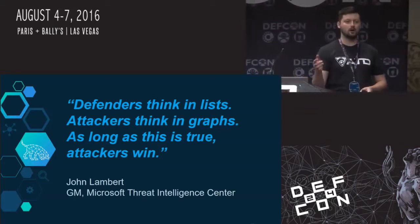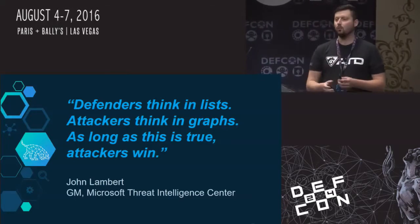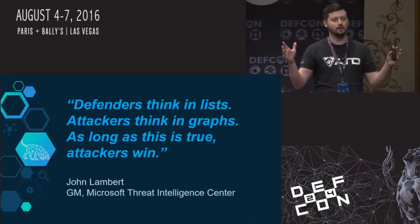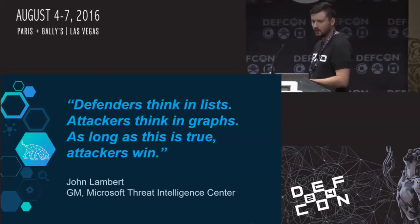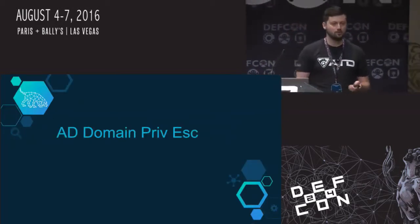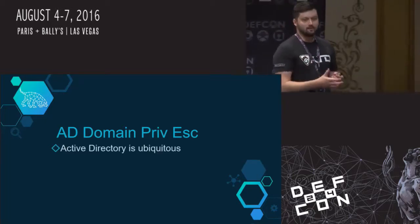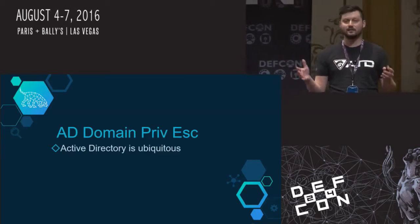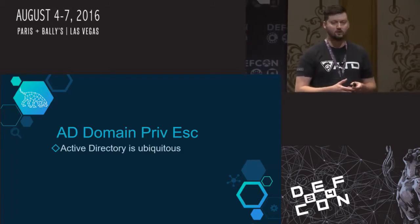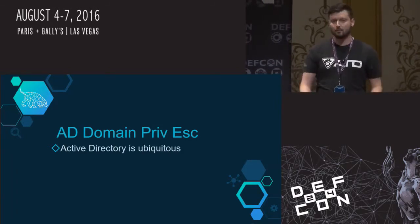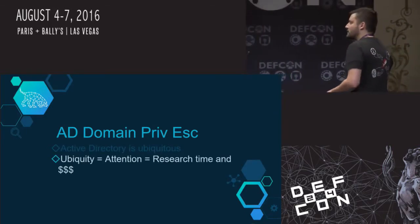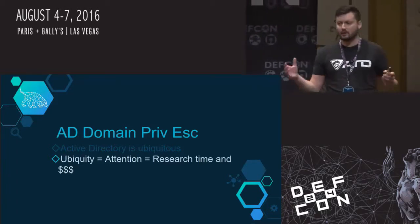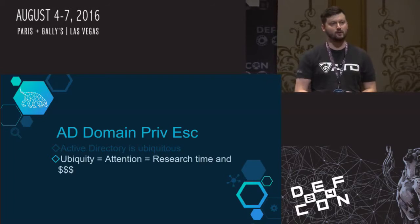There's a great blog post where John goes into some depth about this concept. What we hope to show you is that not only are we going to start thinking in graphs, we're going to start using them practically to automate a lot of our work. Active Directory is effectively ubiquitous — more than 95 percent of Fortune 500 organizations use Active Directory.